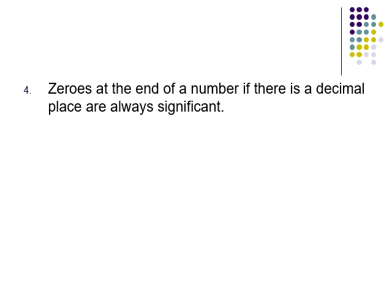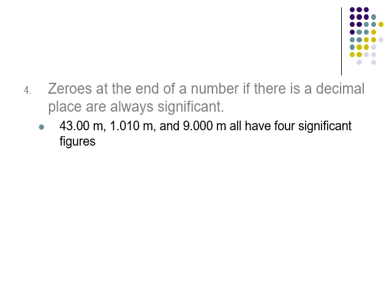Zeros at the end of a number are significant if there is a decimal present — meaning we can see the decimal point. Each of these numbers would have four significant digits. The 4 and 3 in forty-three are nonzero and significant. The zeros to the right of the number are significant because there's a decimal present. A sandwiched zero is also significant. The 9 is significant as a non-zero, and trailing zeros with a decimal present are significant.